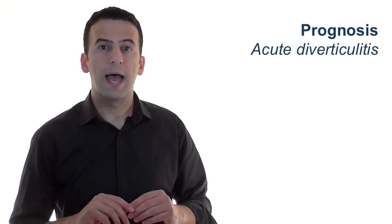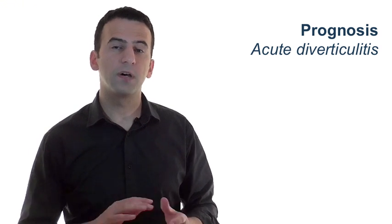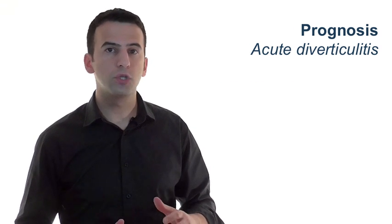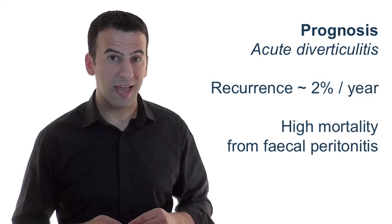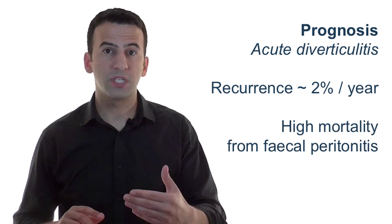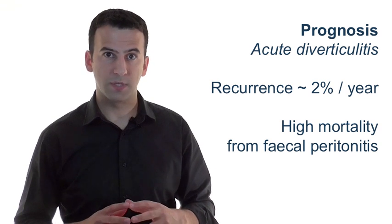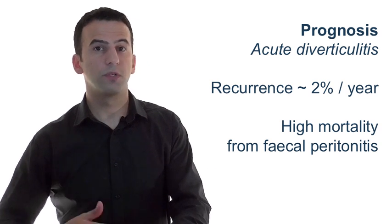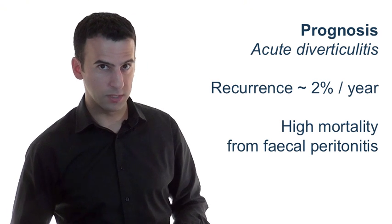The prognosis of a single attack of diverticulitis depends on its severity and on the premorbid condition of the patient. Suffice to say, the highest risk of sepsis and death is with the first episode, with a recurrence rate per year of around 2%. You should also appreciate that faecal peritonitis carries a massive risk of death, and you should appreciate that particularly when counselling with relatives. Now bear in mind it's not just about the initial septic episode, but the period after a big operation, when respiratory wound and further intra-abdominal septic complications may be encountered.